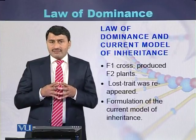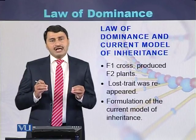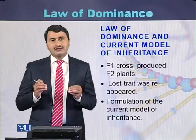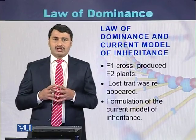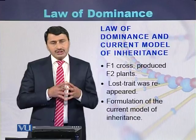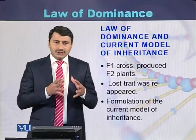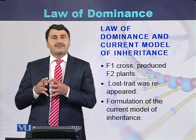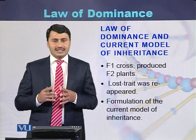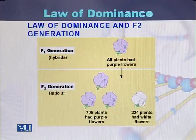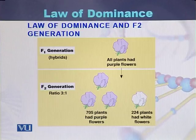As a result of the F2 generation, the plants which were producing white color flowers — which had disappeared during F1 generation — reappeared, but in a specific ratio of 3 to 1. Out of every 4 plants, 3 plants were producing purple color flowers while one plant was producing white color flowers. This was the basis of the current model of inheritance.